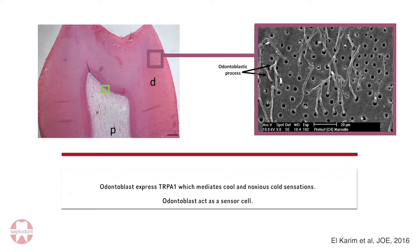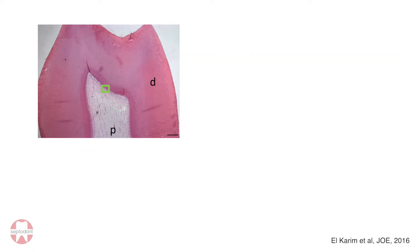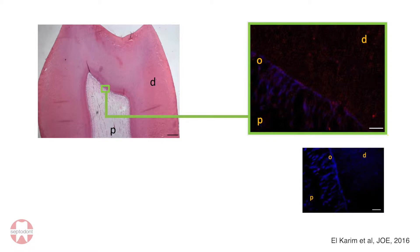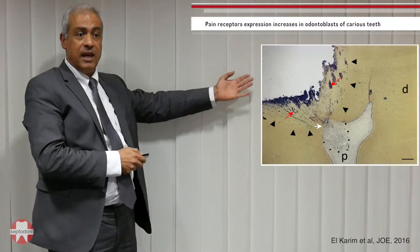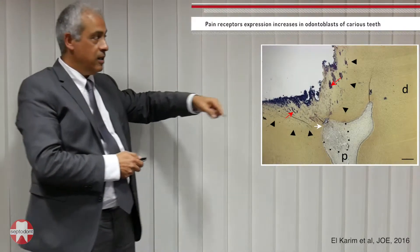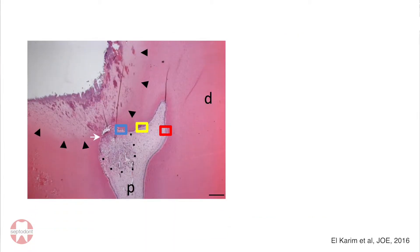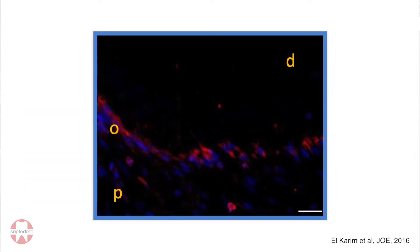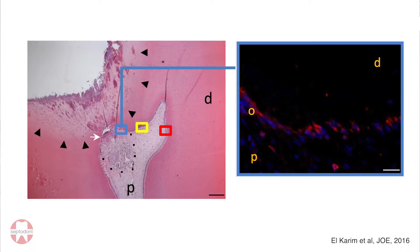In healthy teeth, odontoblasts express this receptor at a low level, as shown on the slide in red. When you look at the same type of tooth when it is inflamed — a carious tooth — you can see the injury site, and the expression of this receptor increases significantly, much more intense than in healthy teeth.